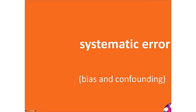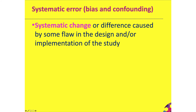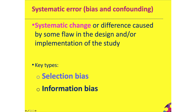Now let's move on to systematic error, bias, and confounding. Systematic error is a systematic change or difference caused by some flaw in the design or implementation of a study. The key types of bias are selection bias, information bias, and confounding — which is a special type of bias.